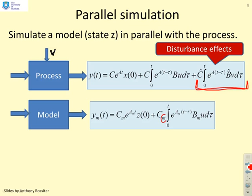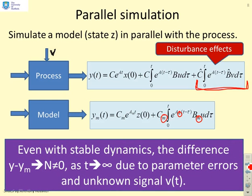There's also another subtlety here. You'll see I've got C_m, A_m and B_m. I've allowed for the model parameters to be slightly different from the real process parameters. So now y and y_m are not going to be the same. Even with stable dynamics the difference y minus y_m is going to tend to some value which is not zero because you've got parameter errors and an unknown signal V.